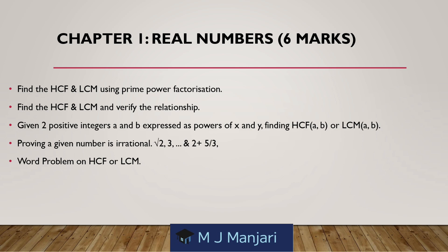Chapter 1: Real Numbers — approximately 6 marks. Most questions will be: find the LCM and HCF using prime factorization; find HCF and LCM and verify the relationship given two positive integers A and B expressed as powers of x and y; finding HCF and LCM; proving a given number is irrational such as root 2, root 3, or 2 plus 5 by 3; and word problems on HCF or LCM.